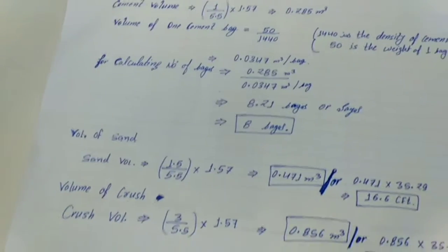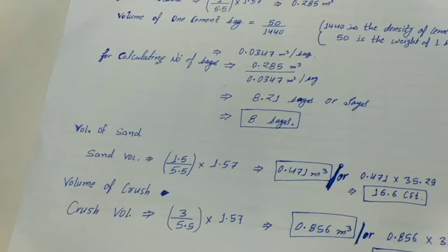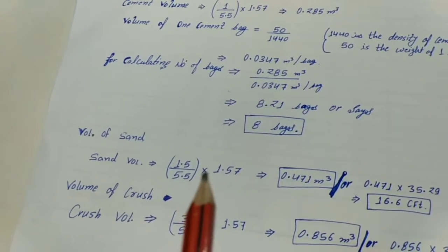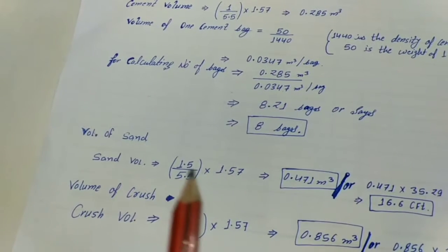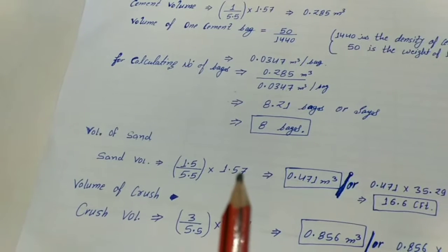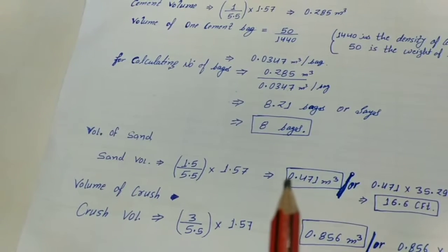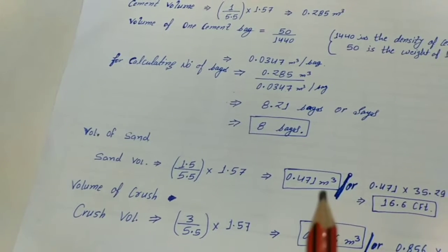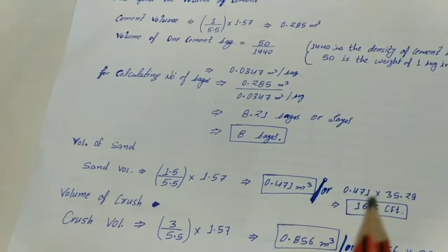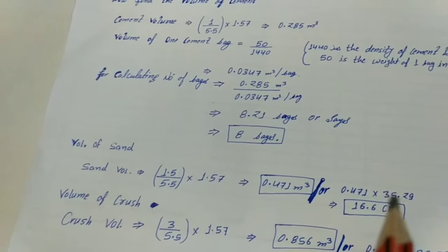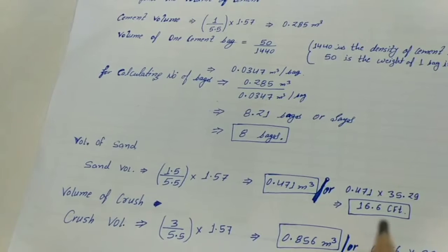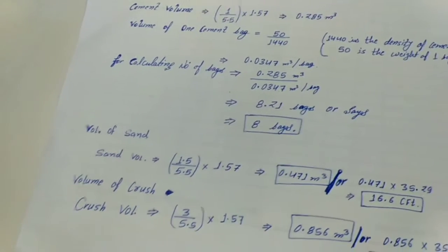Now we calculate the volume of sand. Volume of sand = (1.5 / 5.5) × 1.57, where 1.5 is taken from the mix ratio, 5.5 is the sum of ratios, and 1.57 is the dry volume. The result is 0.471 cubic metres. Converting to CFT by multiplying by 35.29, the quantity is 16.6 CFT.